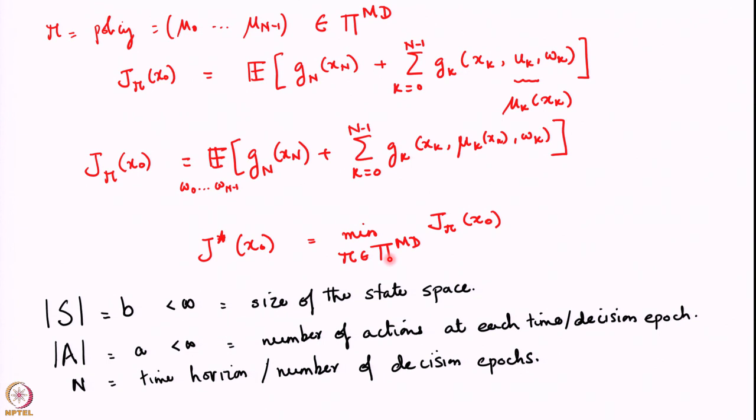What we will see in today's and subsequent lectures is that there is actually a way to simplify this by using the structure of the problem - the fact that there is an underlying Markov process, that the cost is additive, and so on. All of this will be exploited to reduce the complexity of searching this way. In a sense, we will not attack this problem as one where we have to search over all Markov deterministic policies.